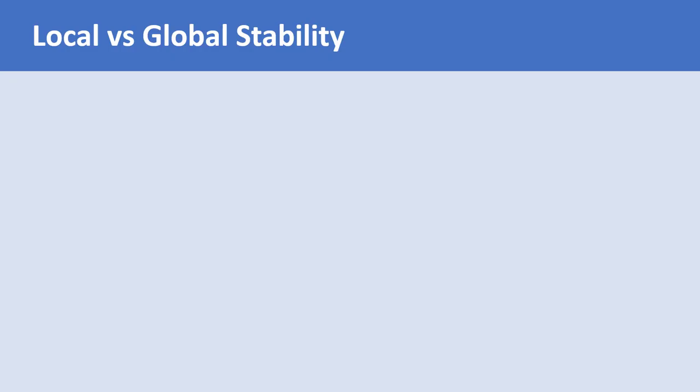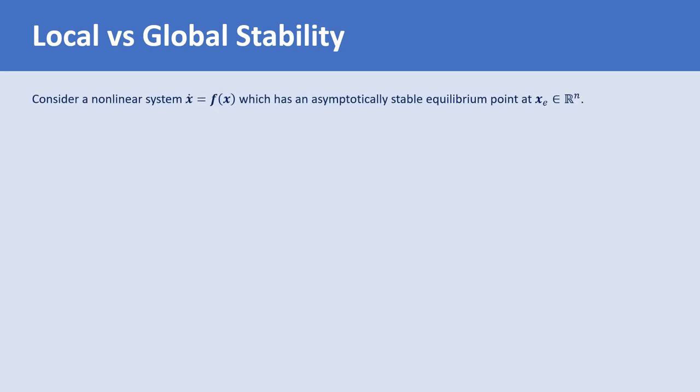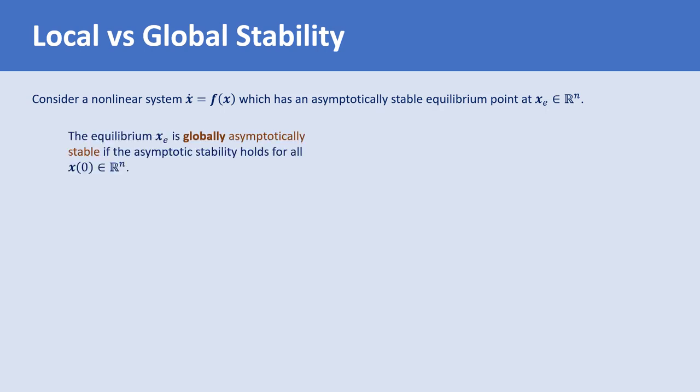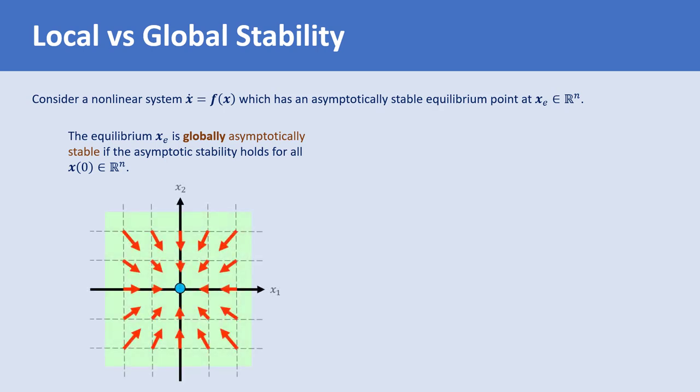Consider a non-linear system in the form of x_dot = f, and assume the equilibrium point x_e is asymptotically stable. An equilibrium point is globally asymptotically stable if the asymptotic stability holds for all initial conditions in the space. For example, in this vector field, all trajectories of the system starting from any initial condition in R2 converge to the equilibrium point at the origin, so the origin is globally asymptotically stable.